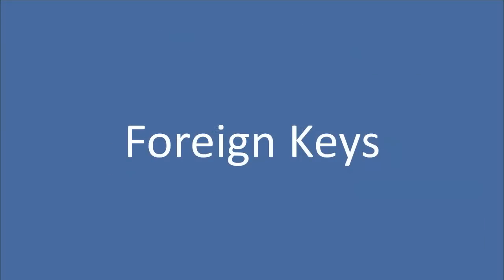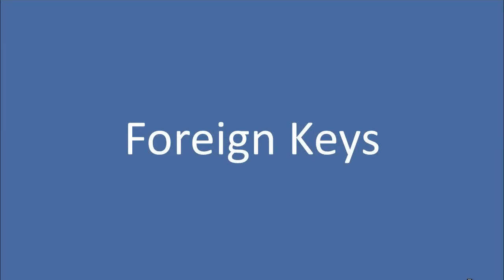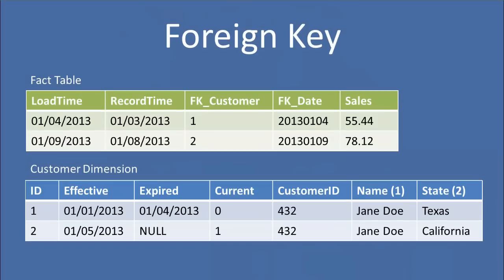That leads us into our foreign keys. A foreign key is a field that points to a key in some other table. Here we have a foreign key in a fact table — the foreign key customer is pointing to the surrogate key in our customer dimension. You'll see this over and over again: foreign keys in your fact tables will always point to the surrogate key in your dimension.